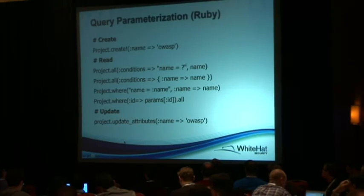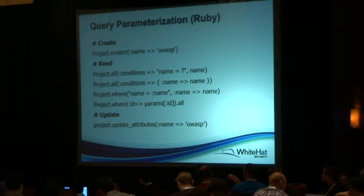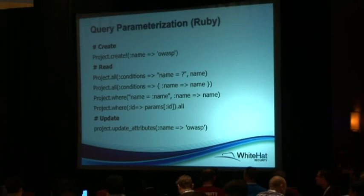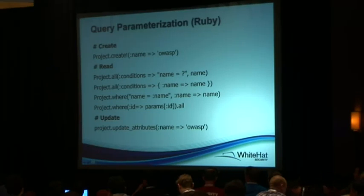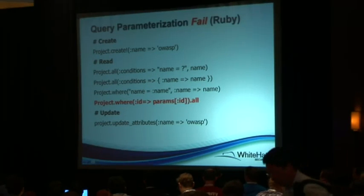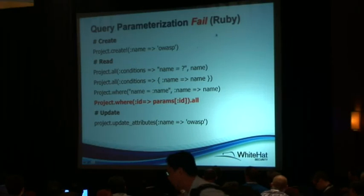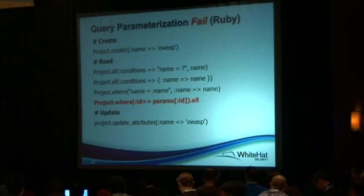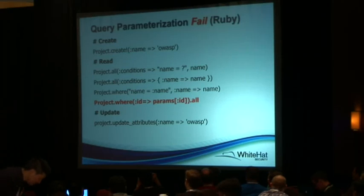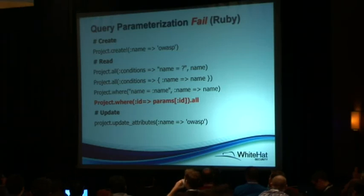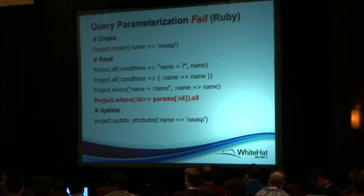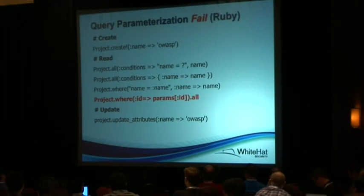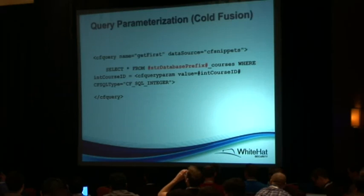Parameterization is available in Ruby. Ruby is the only example in the history of programming languages where someone provided an API intended to parameterize queries that actually caused injection. Underneath the hood of older versions of Ruby on Rails, they used string concatenation under the parameterization API that caused injection. This was fixed in Ruby 3.2.4, 3.1.5, and 3.0.1.3 — it was a framework issue, and it's the only time I've seen a parameterization API cause harm.